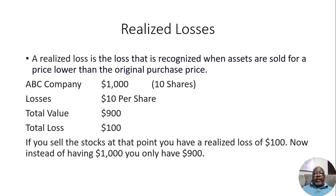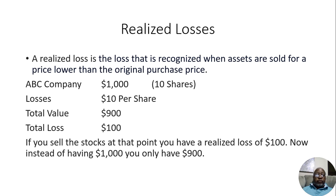It's only realized gains if you sold it and now you have the money. But since you own the stock and haven't sold them yet for the actual gain in your pocket or brokerage account, it's an unrealized gain. Now let's go to the next one — realized losses. A realized loss is a loss that is recognized when assets are sold for a price lower than the original purchase price. So you bought 10 shares of ABC Company for $100 each — that's $1,000 — and then the stock dropped $10 a share, so you've lost $100. The total value of your stock is now $900. If you sell the stocks at that point, you have a realized loss of $100.